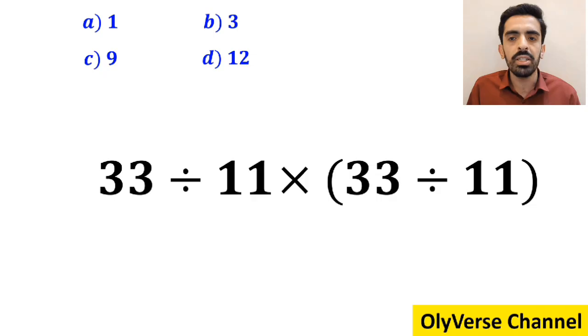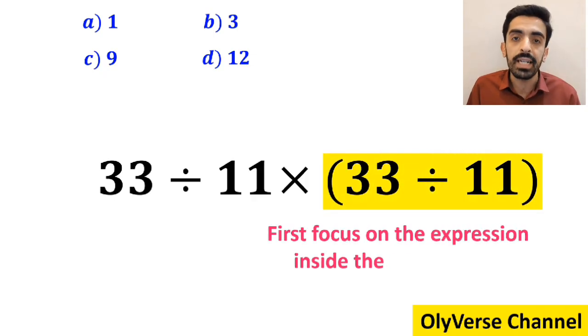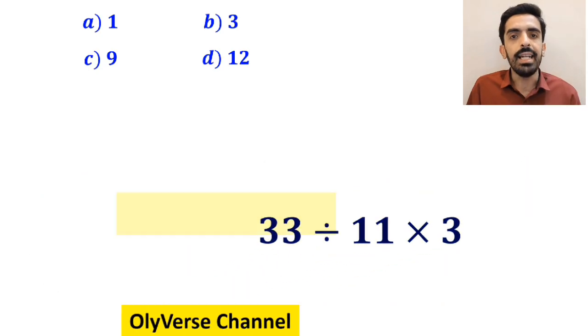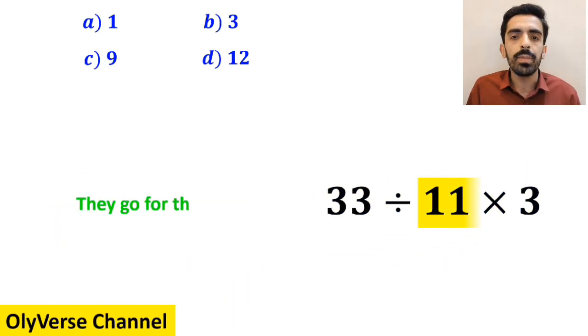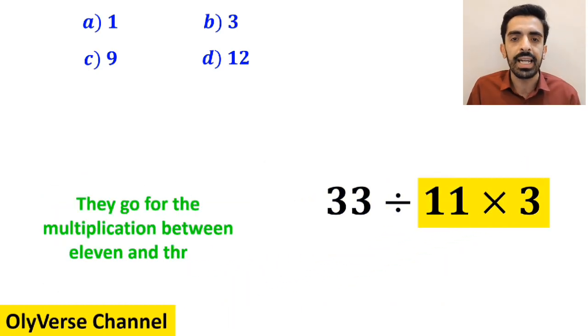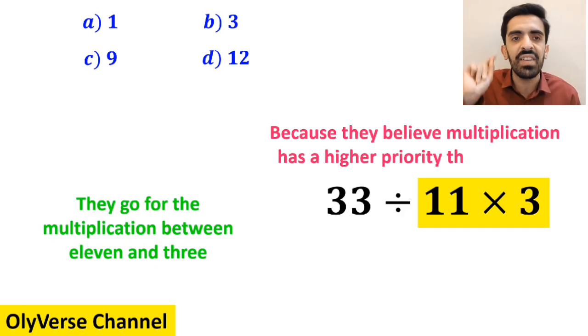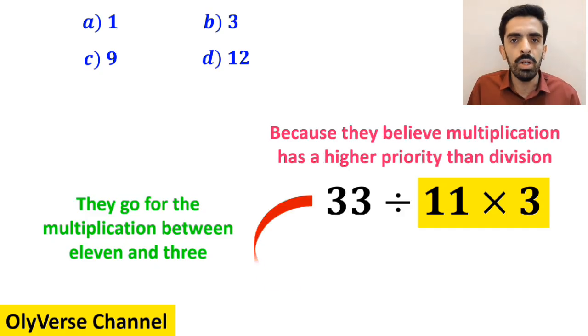Many people, when starting to solve this question, first focus on the expression inside the parenthesis and rewrite it as 33 divided by 11 multiplied by 3. In the next step, they go for the multiplication between 11 and 3, because they believe multiplication has a higher priority than division. So they simplify this expression and rewrite it as 33 divided by 33,